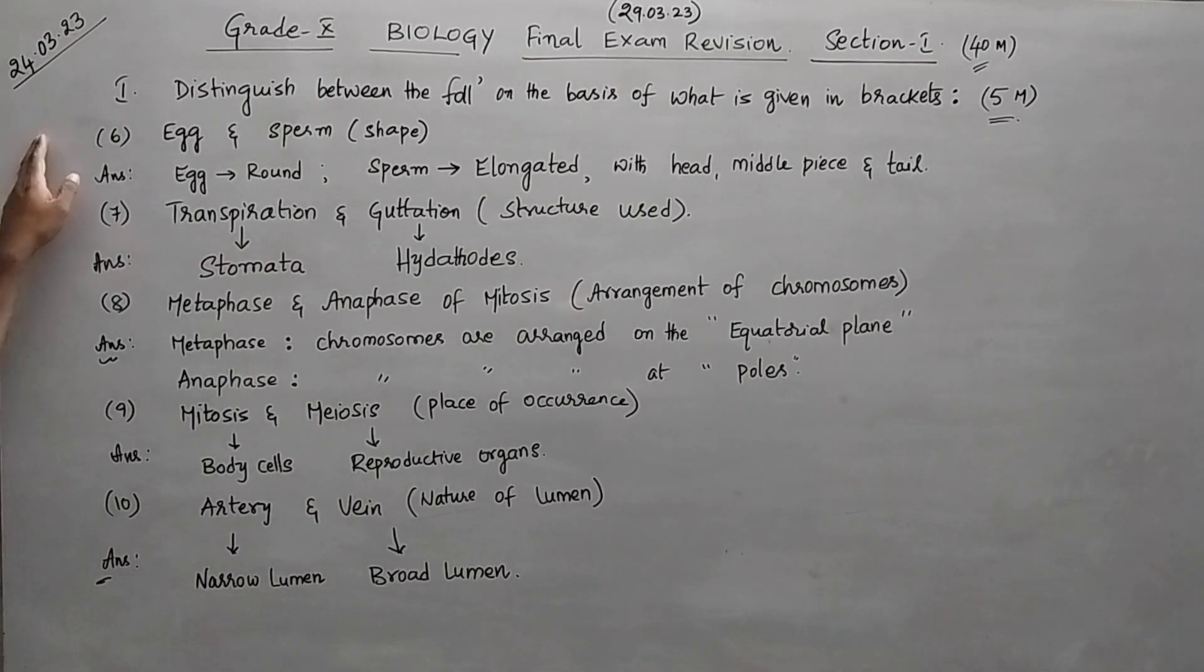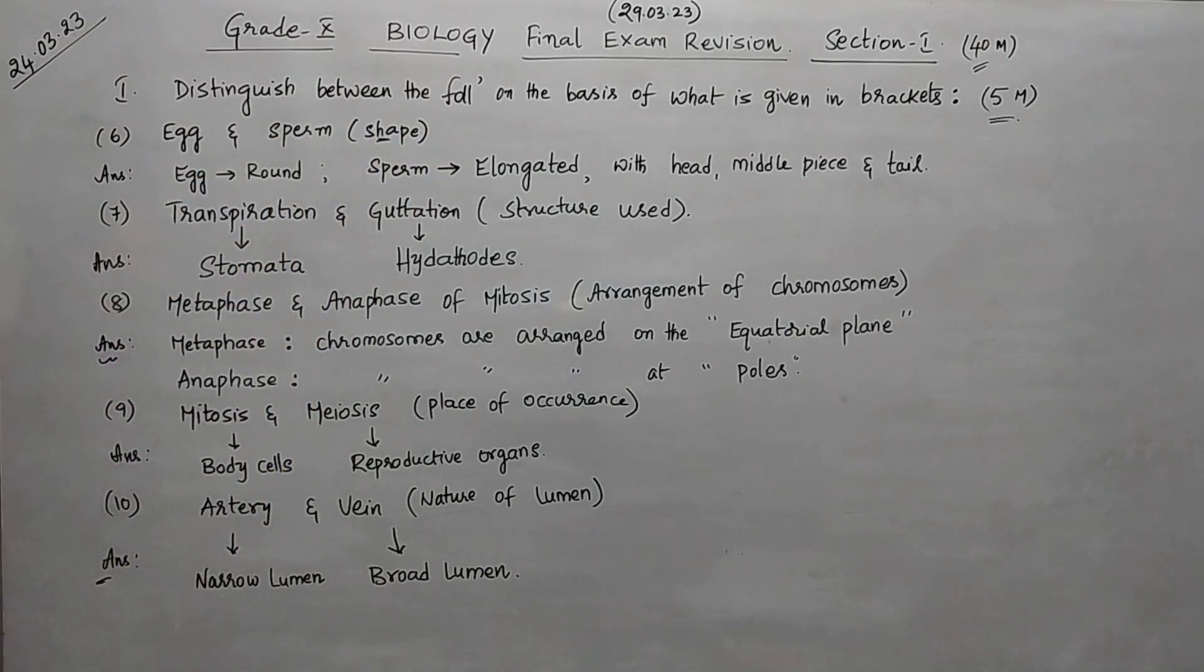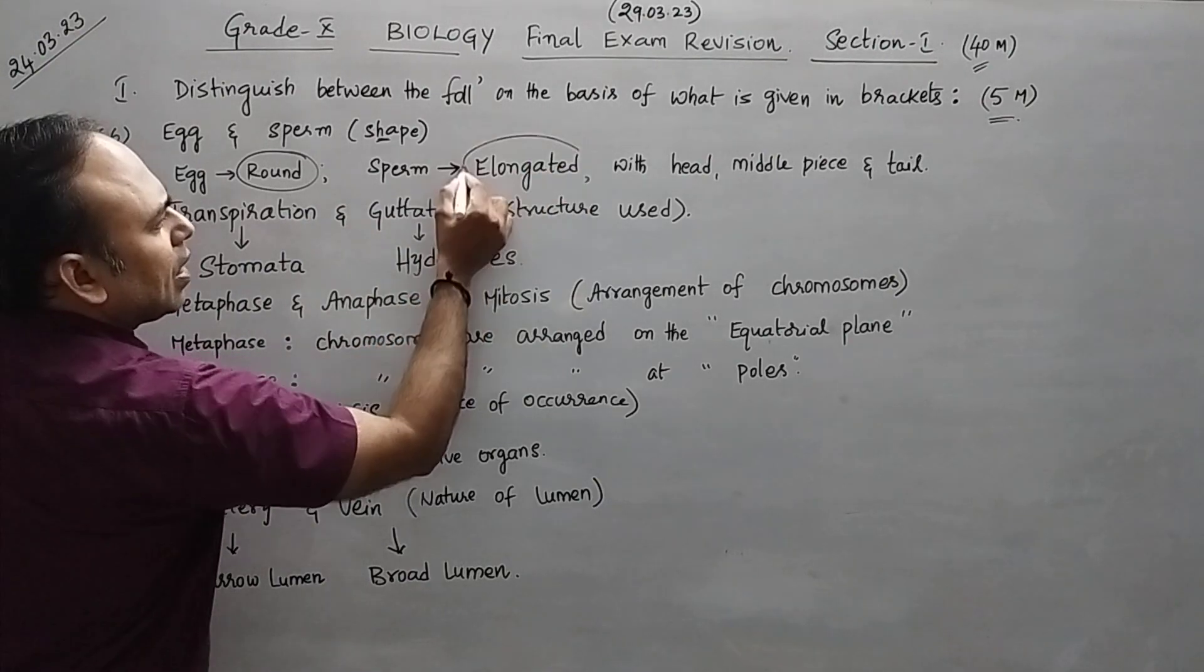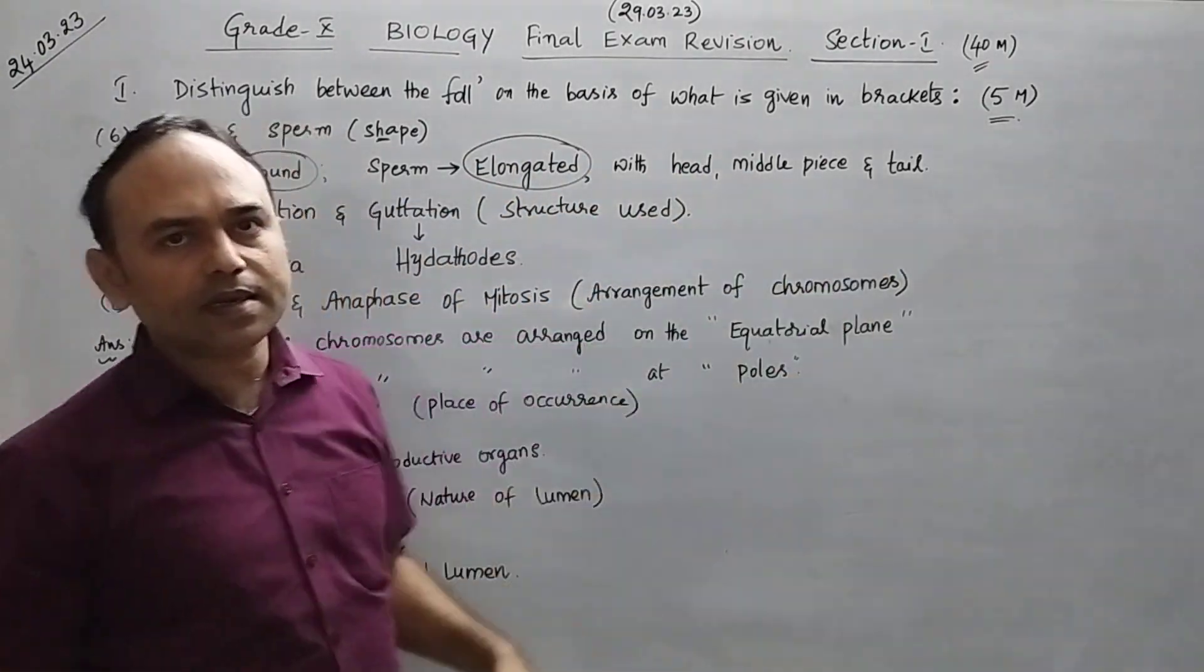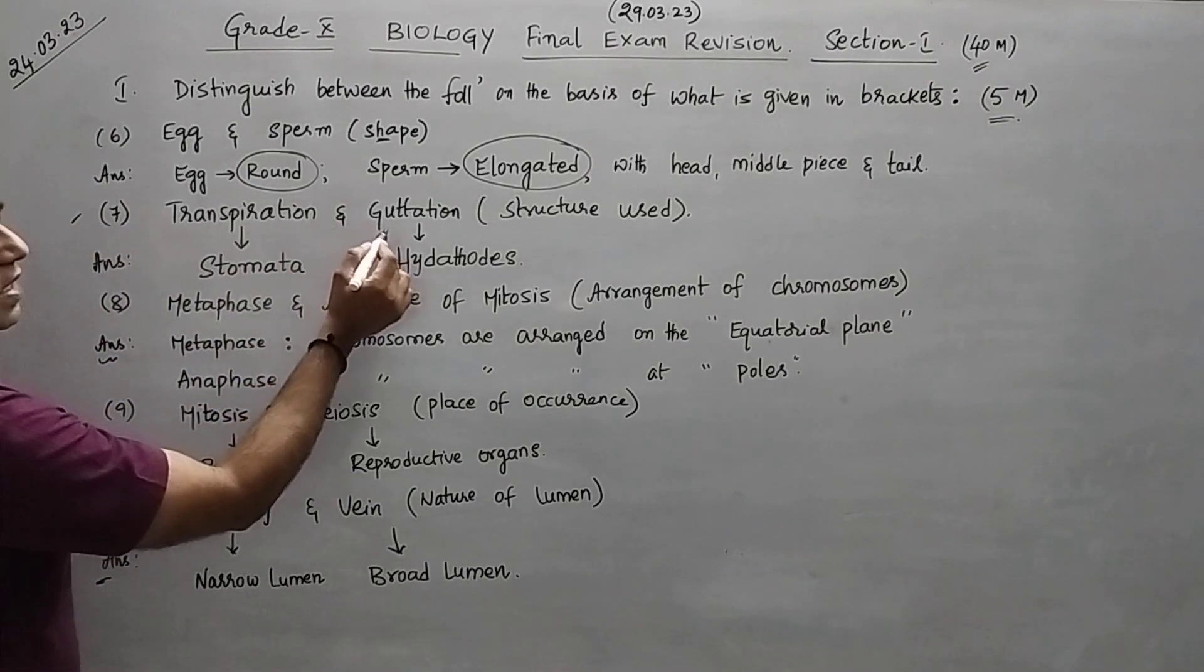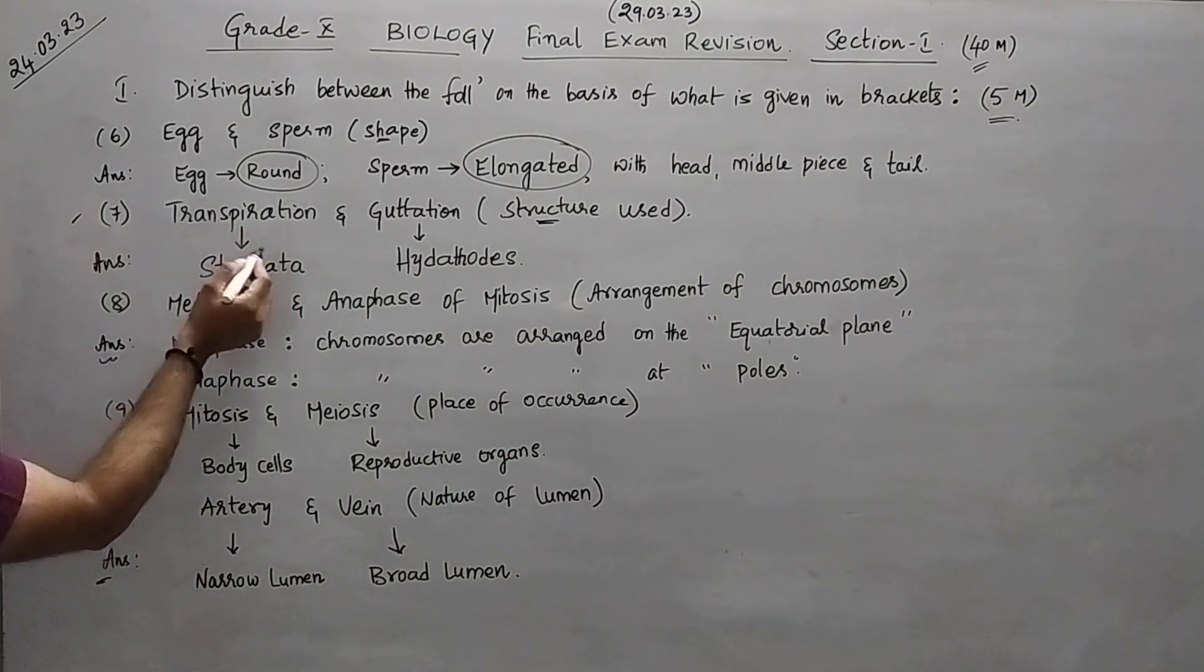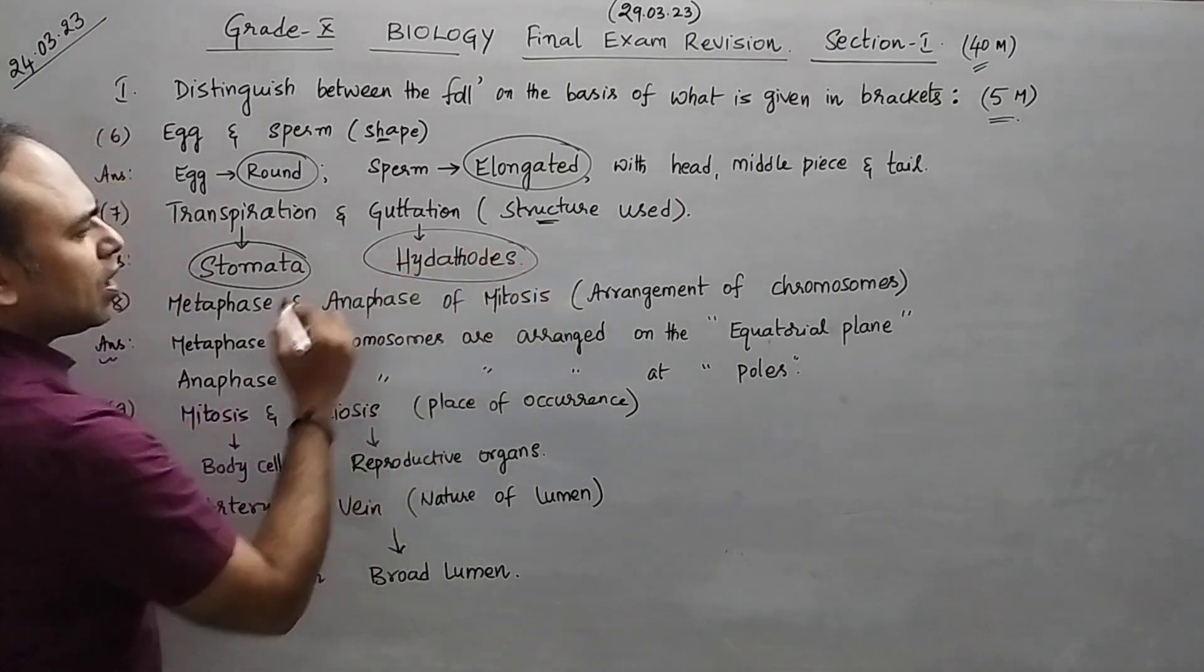Question number six, they have given egg and sperm - what is the difference in the shape? If you take egg it is round. If you take sperm it is elongated, which has head, middle piece and tail. Question number seven, transpiration and guttation - what are the structures used? We all know that transpiration takes place through stomata and guttation takes place through hydatodes.